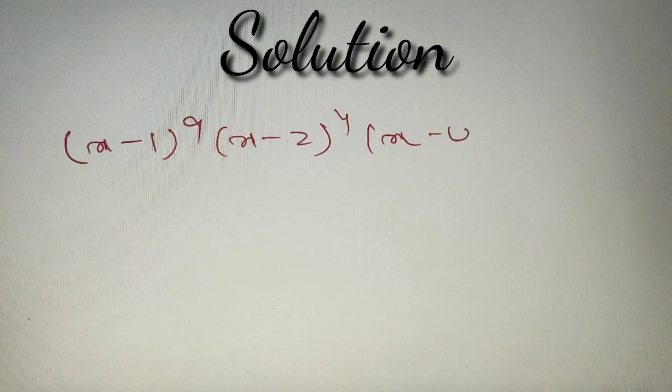According to the given question we have to find the sum of coefficients of the following polynomial: (x minus 1) raised power 9 into (x minus 2) raised power 4 into (x minus 4). Now this question may seem bit tricky and lengthy but this is one of the simplest questions that can come in any entrance exam.